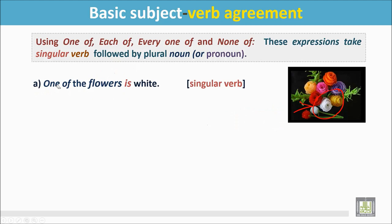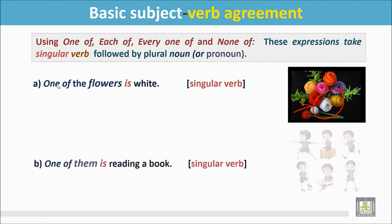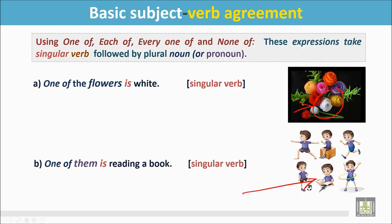Another example: One of them is reading a book. In this picture, there are many children but one of the children is reading a book. The sentence begins with 'one,' and though 'them' is a plural pronoun, it is followed by a singular verb: 'is.'